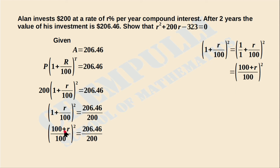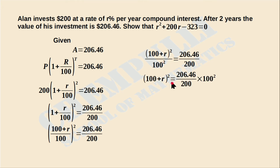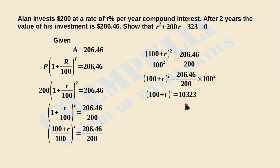We apply the power of 2 to both numerator and denominator: (100 + R)² / 100² = 206.46 / 200. Taking 100² to the right-hand side, division becomes multiplication: (100 + R)² = (206.46 / 200) × 100². Simplifying the right-hand side gives (100 + R)² = 10,323.